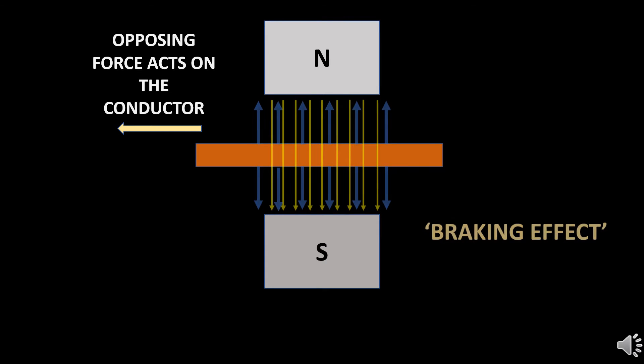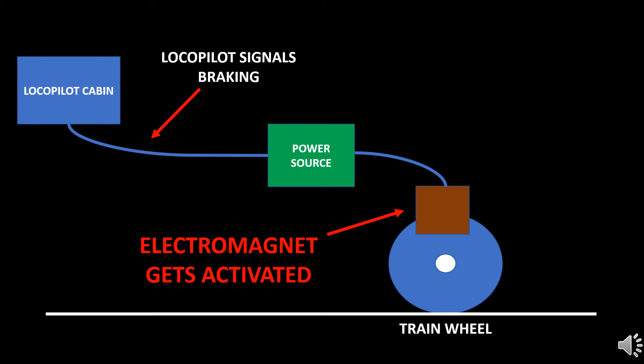The application of the Faraday's law and the Lenz's law brings the train to rest when brakes are applied. Let's see how it's done. When the loco pilot wants to stop the train he applies the brake. This activates the electromagnet near the brakes.